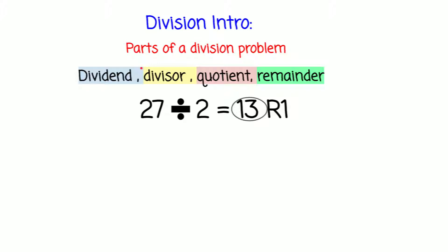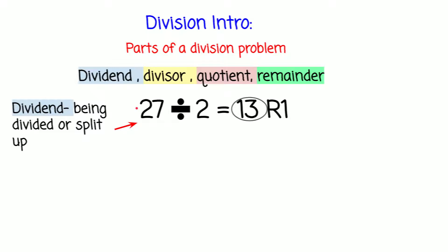Let's learn about dividends. So what is a dividend? 27 over here is considered the dividend because it's being divided or split up by the 2 over here. So this is the dividend — we're splitting the 27 into two parts. And that leads us to what 2 is.